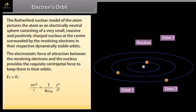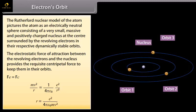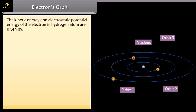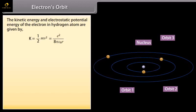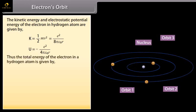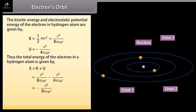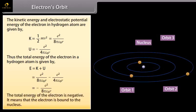Putting in respective values, we get mv²/r = e²/(4πε₀r²). This can be written as r = e²/(4πε₀mv²). The kinetic energy and electrostatic potential energy of the electron in the hydrogen atom are given by K = ½mv² = e²/(8πε₀r) and U = −e²/(4πε₀r). Thus the total energy of the electron in a hydrogen atom is E = −e²/(8πε₀r). The total energy is negative, meaning the electron is bound to the nucleus.